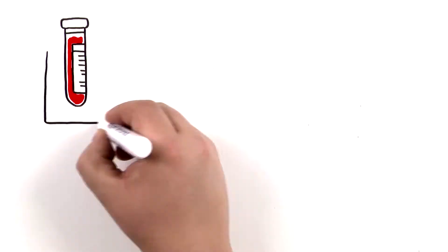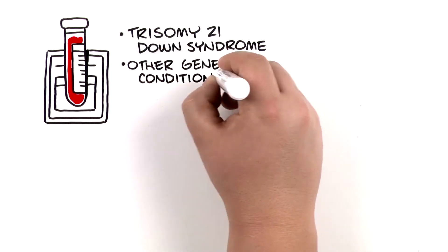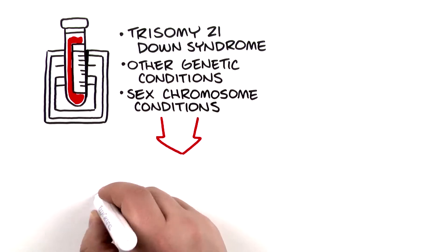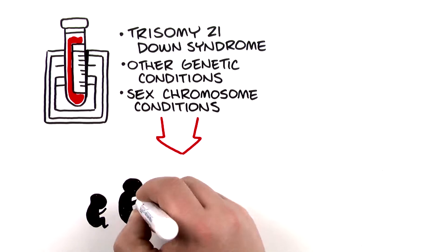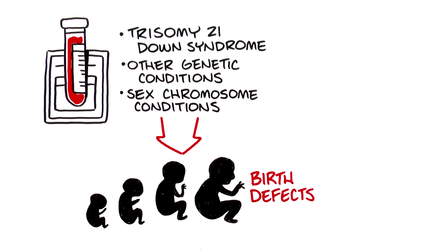Serenity screens for trisomy 21, commonly known as Down syndrome, as well as several other chromosomal conditions that can have a major impact on the health and development of the fetus and can lead to cognitive impairment or physical birth defects.